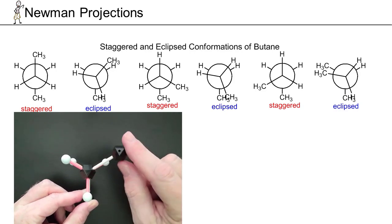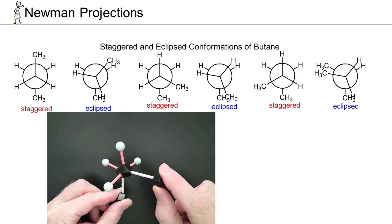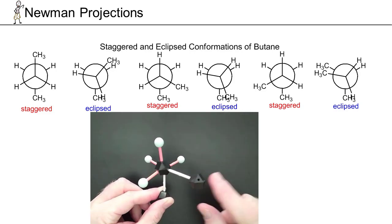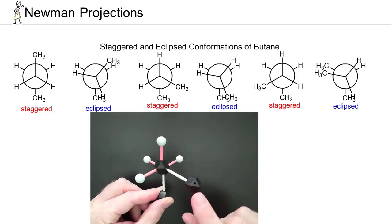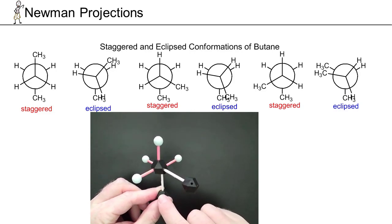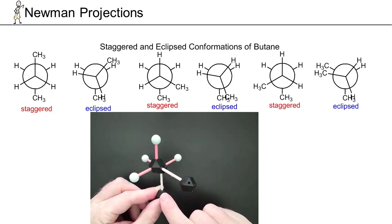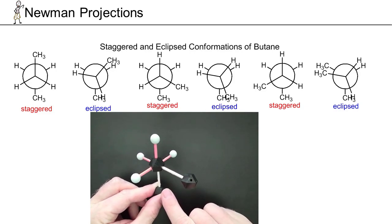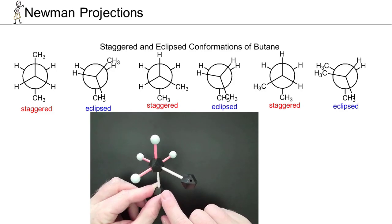Rotating another 60 degrees brings us back to a staggered conformation, but this staggered is not as favorable as the anti-conformation. That's because the two carbons are now only 60 degrees apart — we call that a gauche interaction. There's more steric hindrance associated with gauche interactions than the anti-conformation. The bigger the groups in the gauche interactions, the higher the energy. Keep in mind gauche interactions only occur in staggered conformations, never in eclipsed.